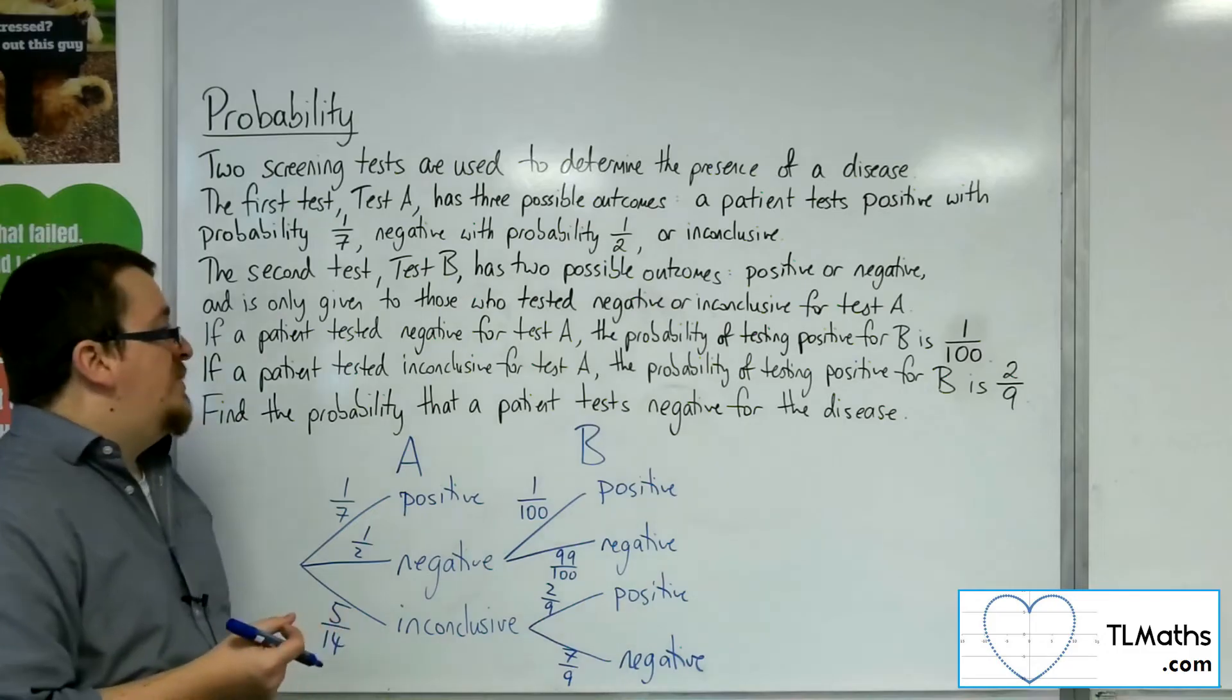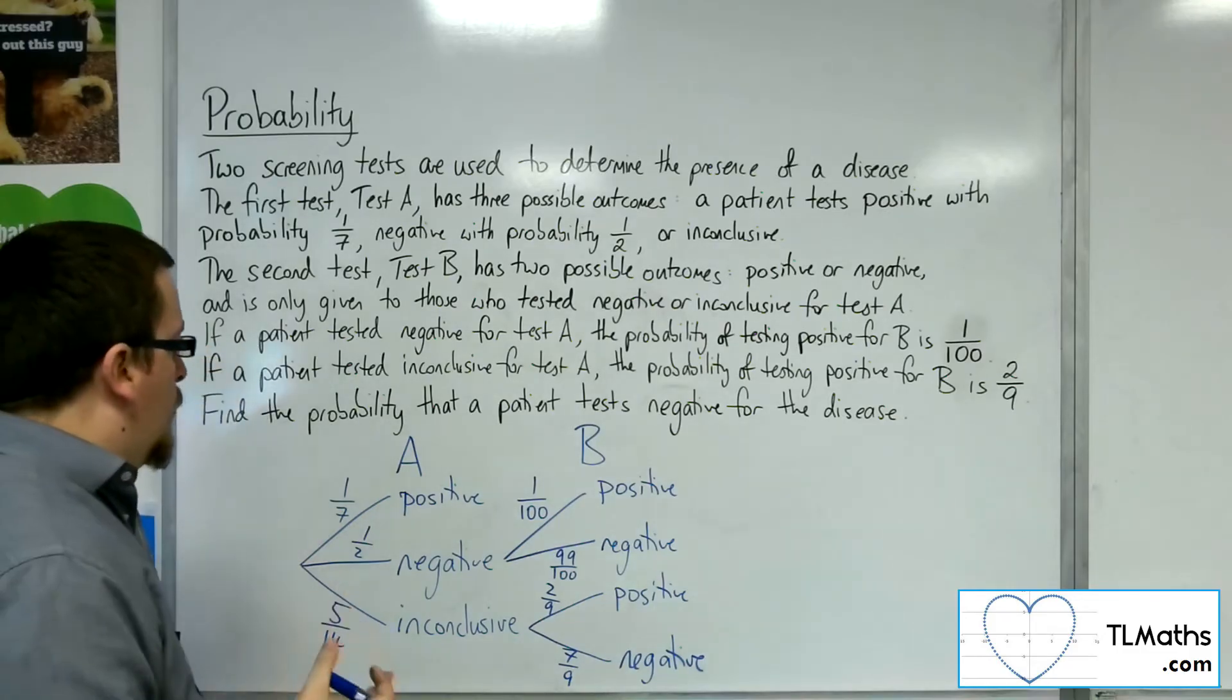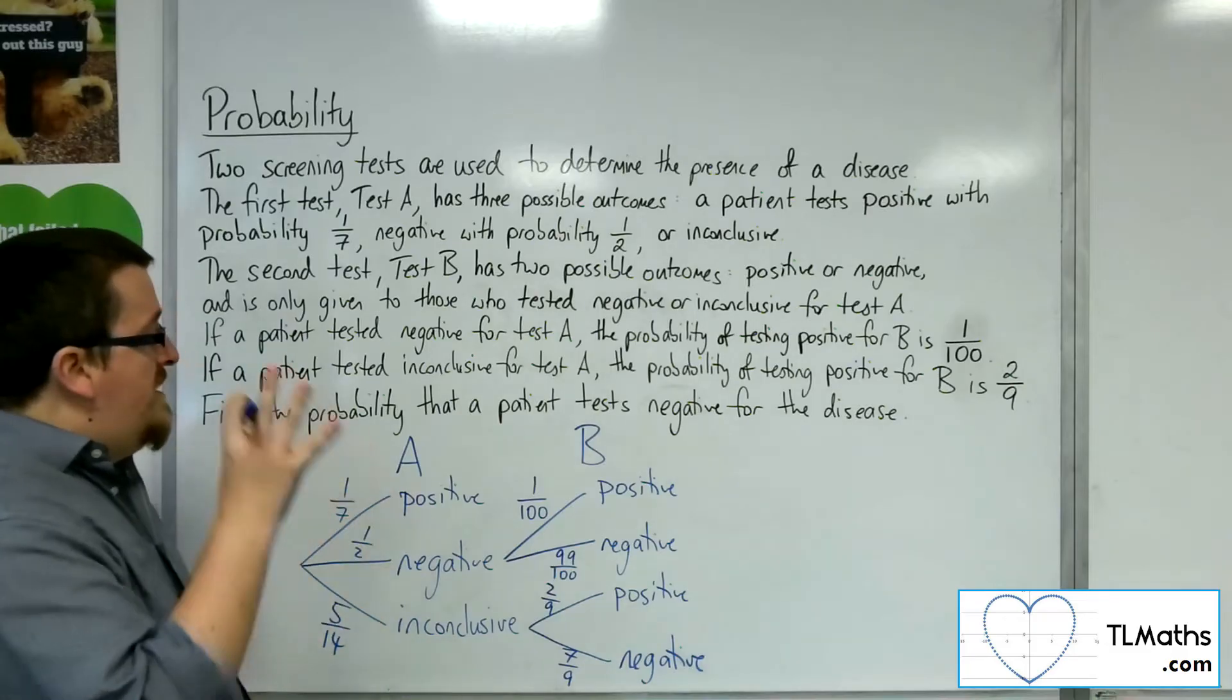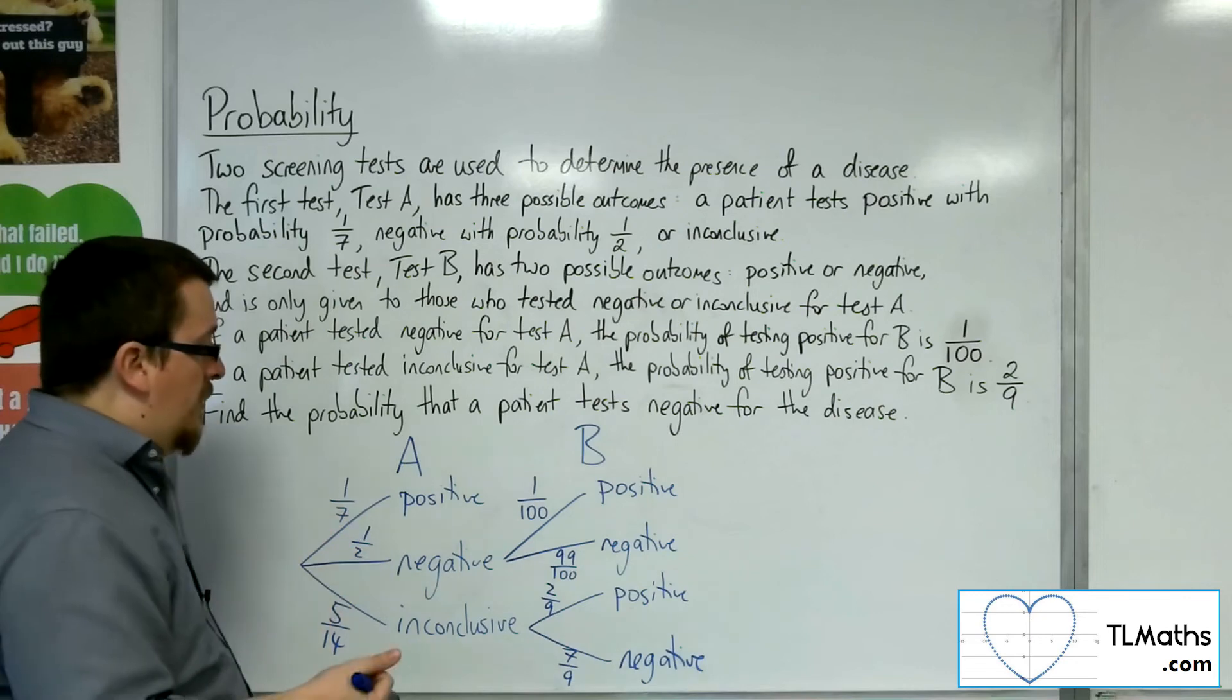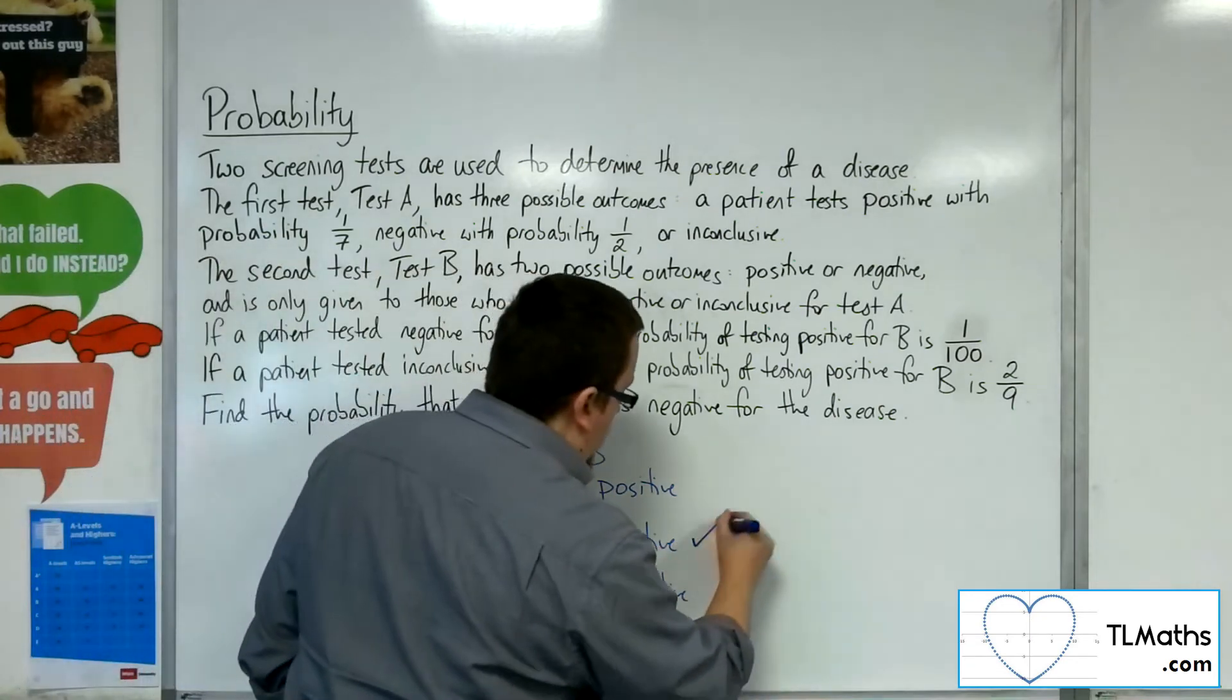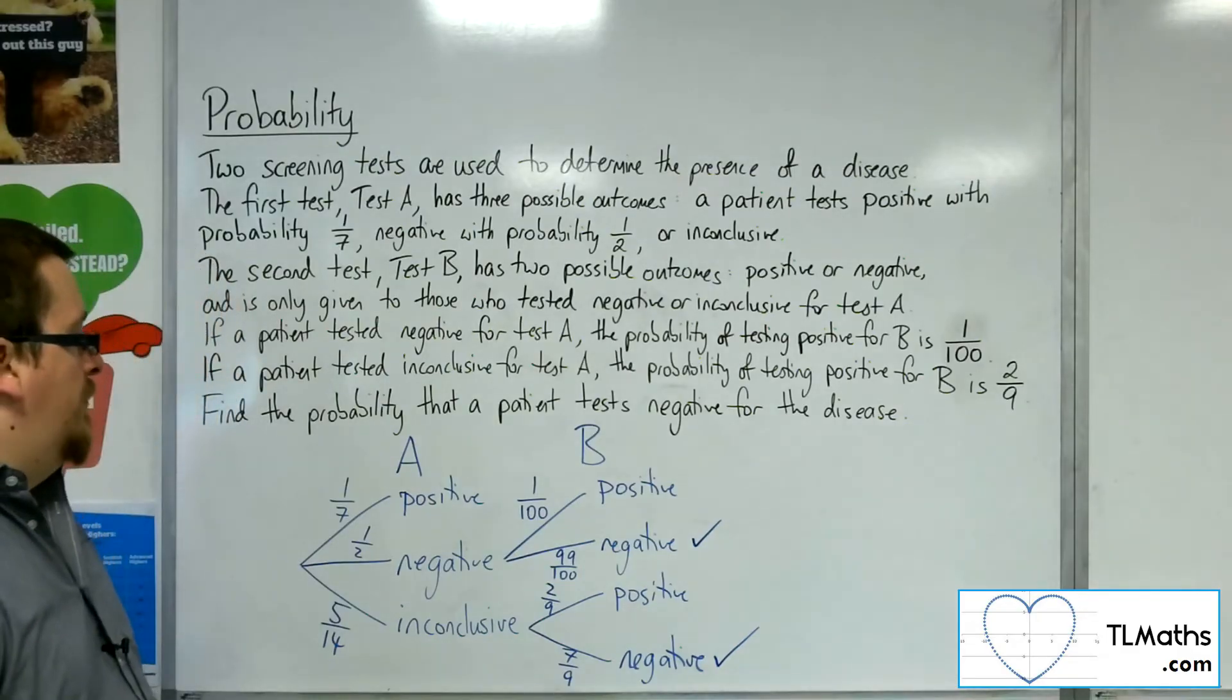Find the probability that a patient tests negative for the disease. Okay, so, the ways that they can end up negative is if, after test B, they have got negative. Okay, so that must mean there and there. There are two possible routes through.